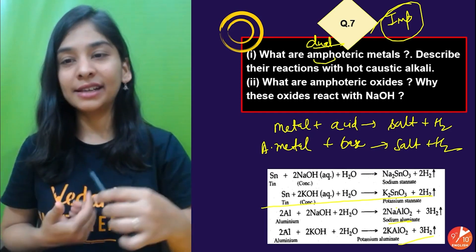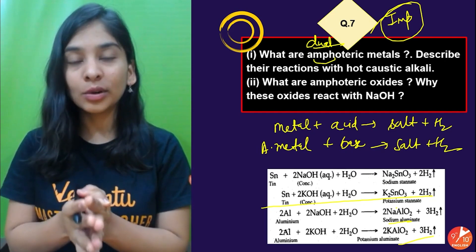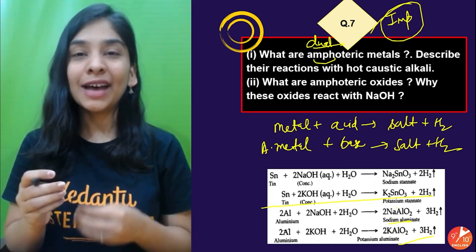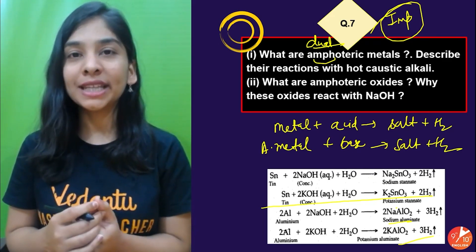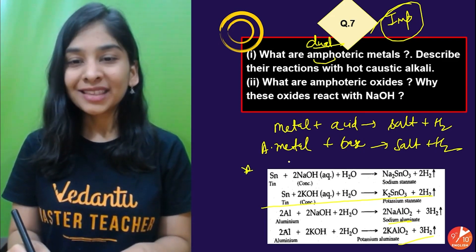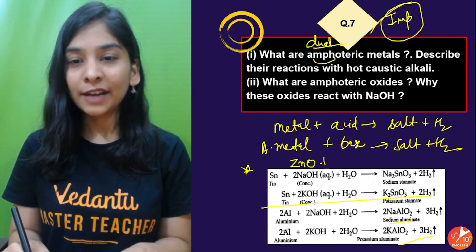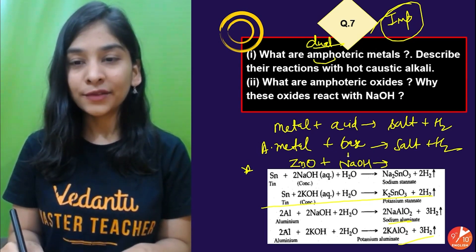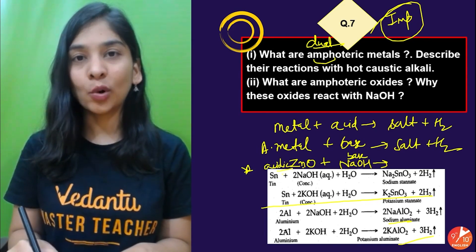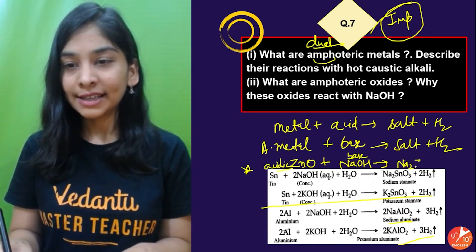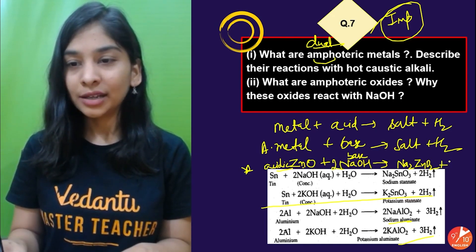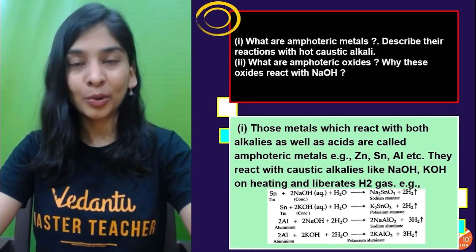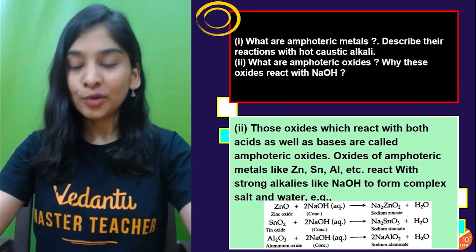Amphoteric oxides are oxides of amphoteric metals that can react with both acids and bases. They react with NaOH because they can behave as acidic substances. For example, zinc oxide (ZnO) reacting with NaOH: ZnO + 2NaOH → Na₂ZnO₂ (sodium zincate) + H₂O. The oxide behaves like an acid reacting with a base to give a salt and water.